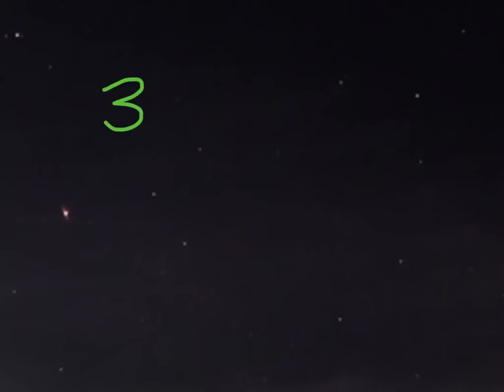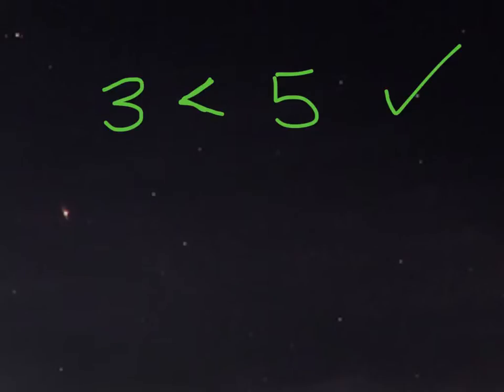So let's say we have the inequality that 3 is less than 5. That's definitely true — we know that 3 is a smaller number than 5. Now, what would happen if I multiplied both of these numbers by a negative number? Let's say I multiplied them both by negative 2.